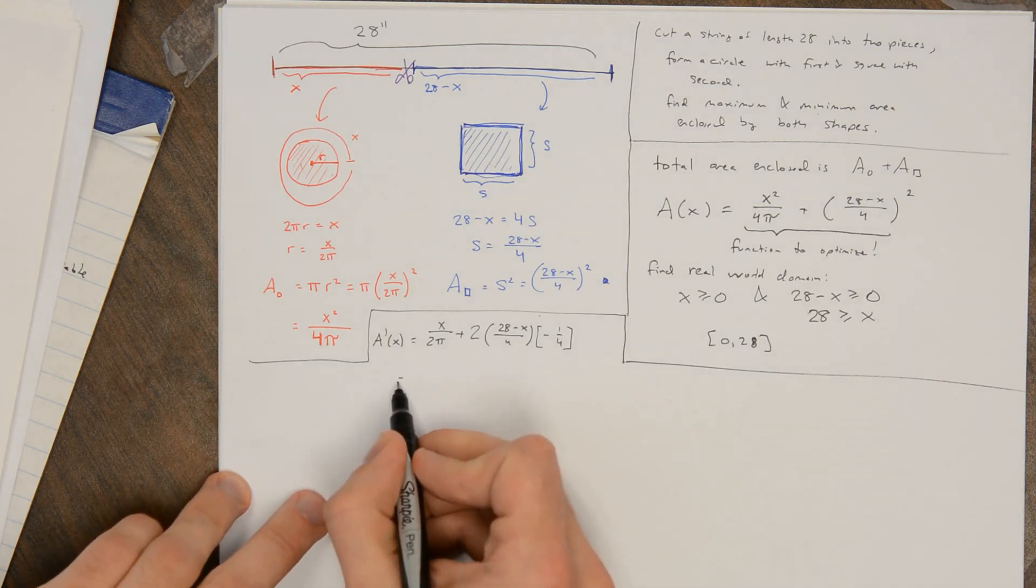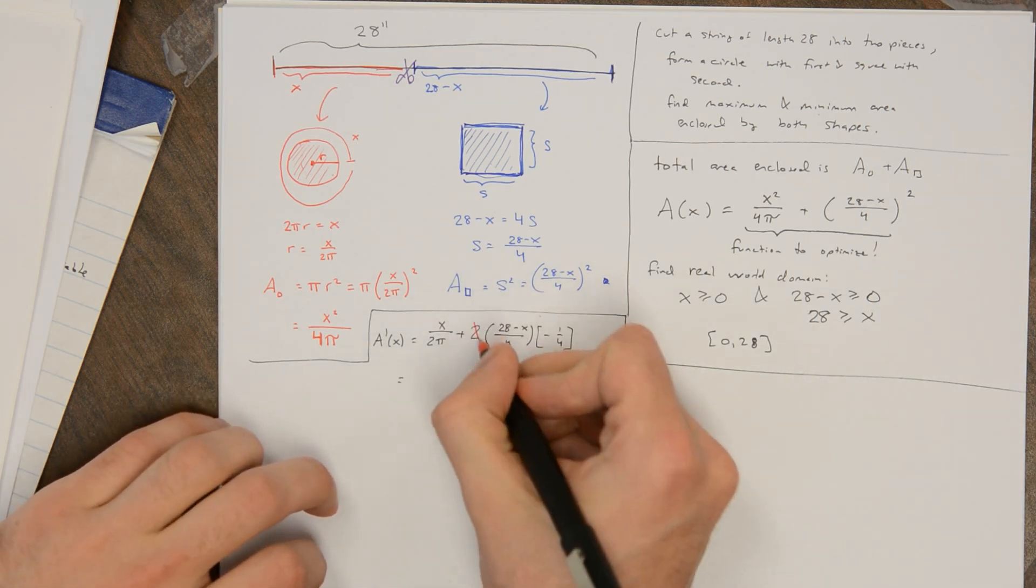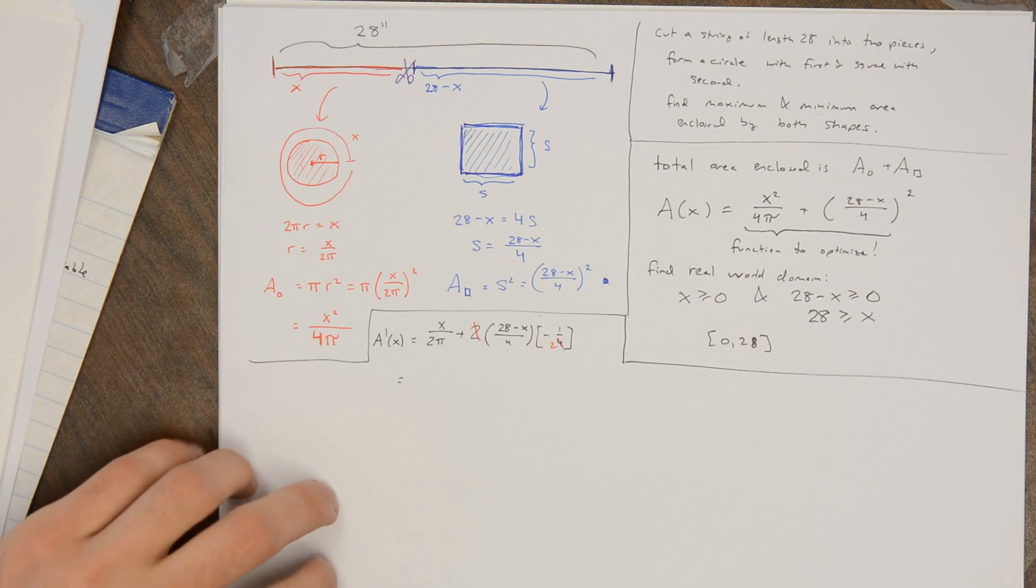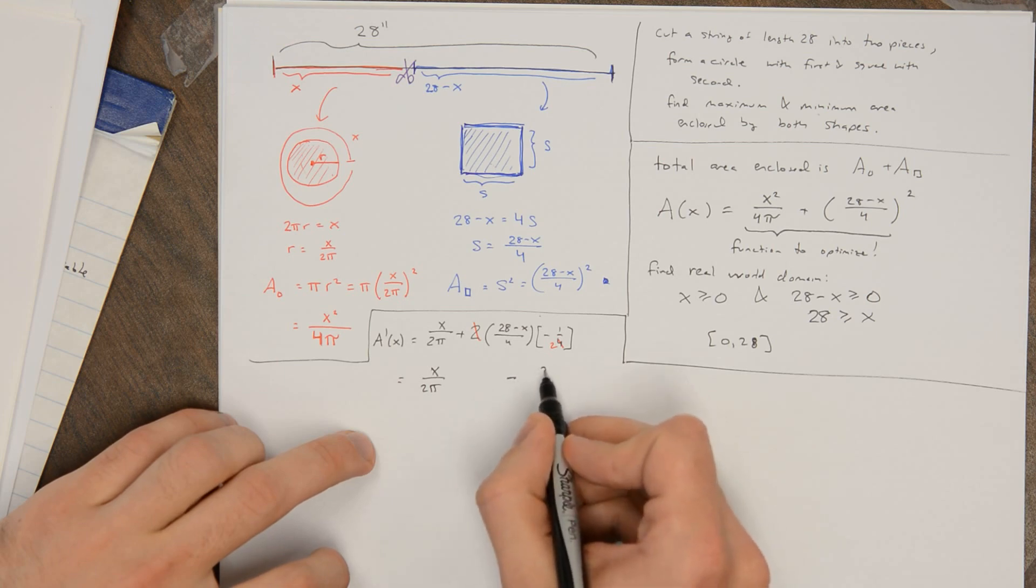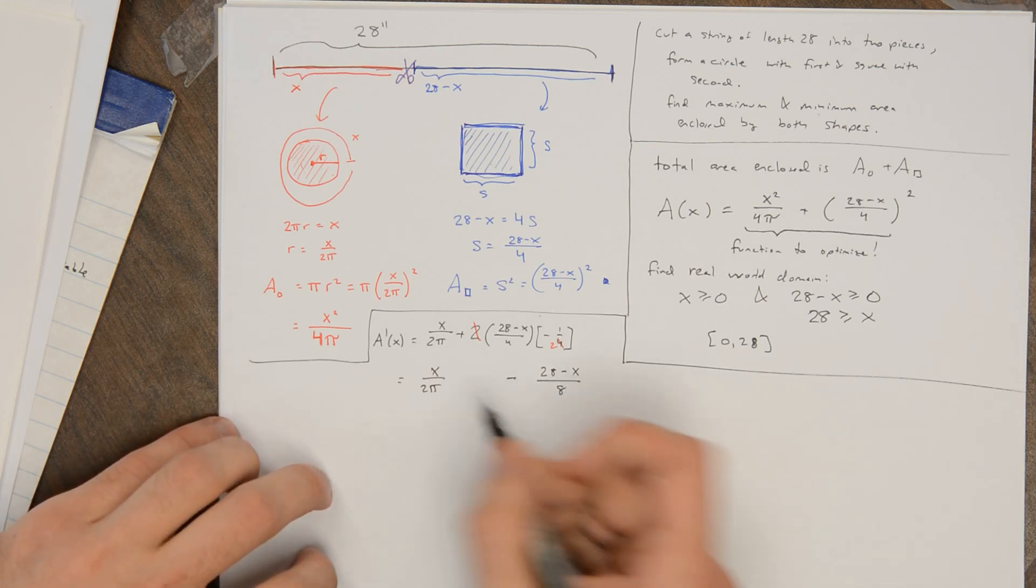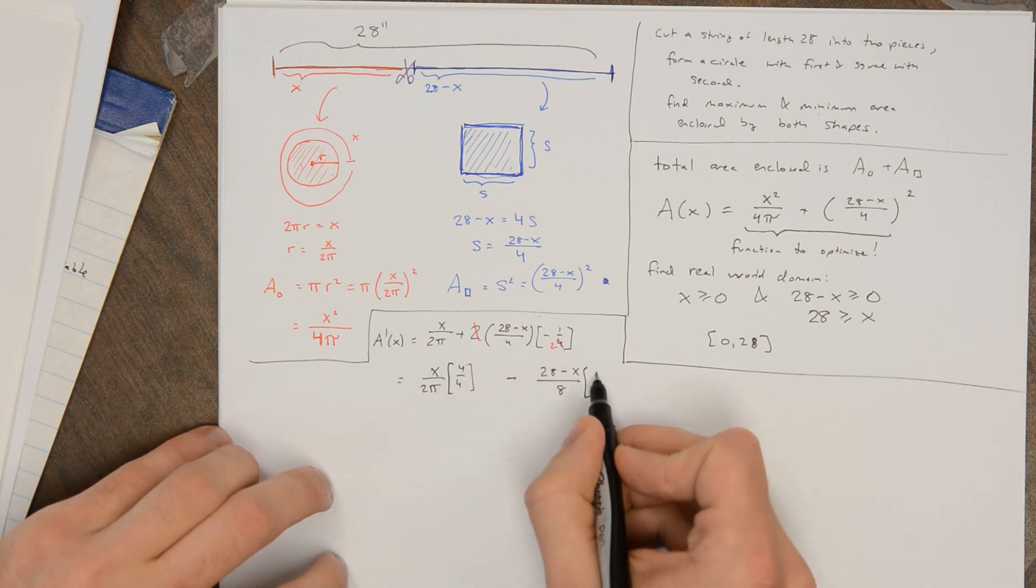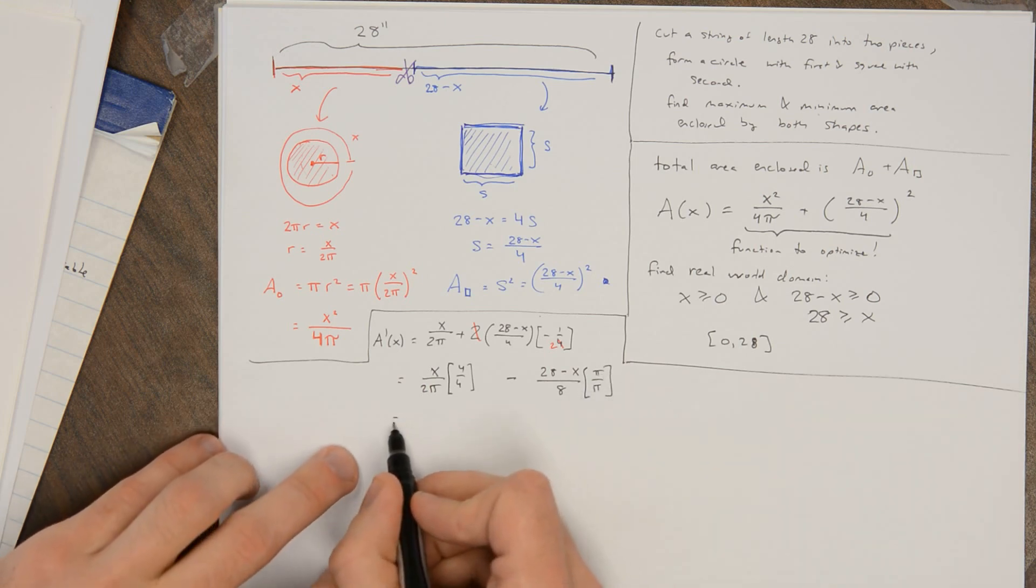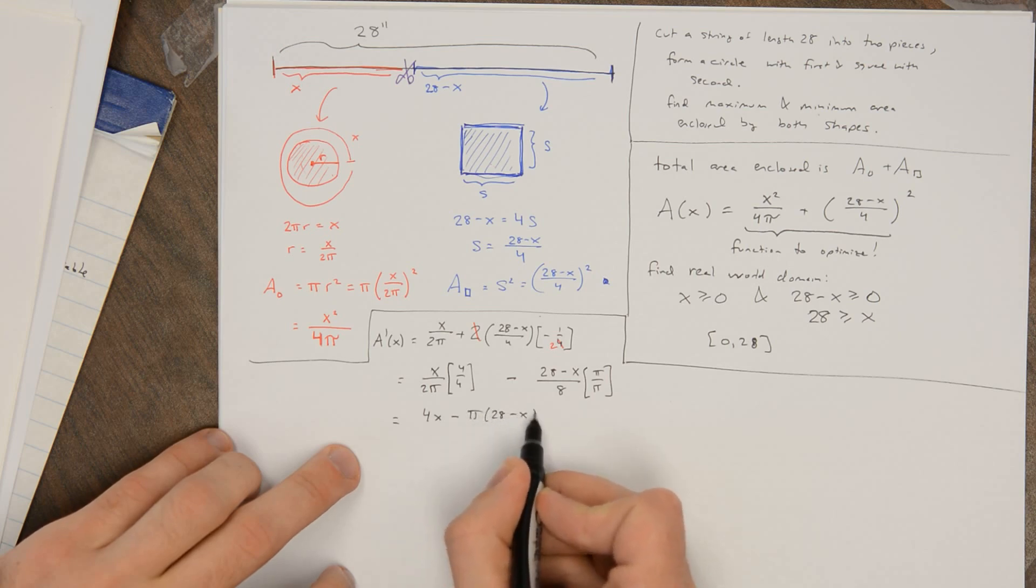So let's go ahead and try to combine this into a single fraction. Kill off a copy of 2 here. This is x/2π - (28 - x)/8. I don't want to get common denominators here, so I'm going to multiply and divide this by 4 and multiply and divide this by π. So this is going to be (4x - π(28 - x)) all over 8π.